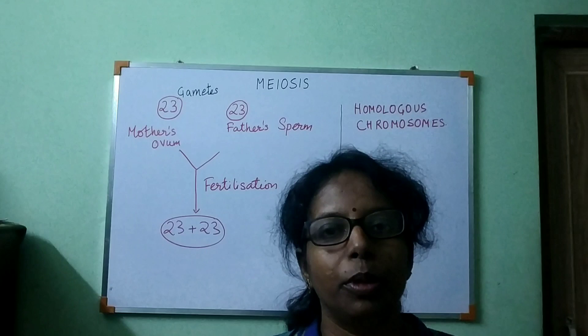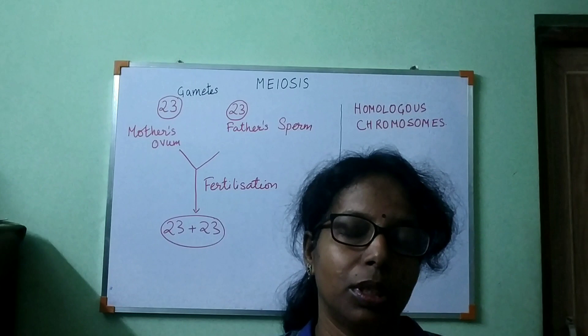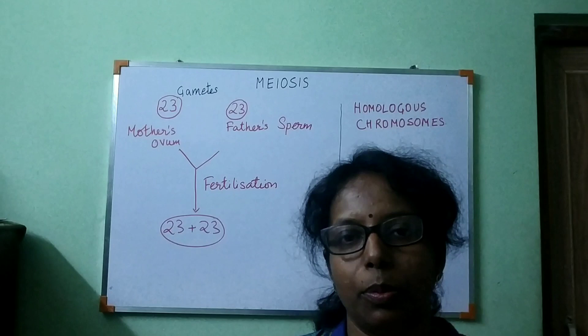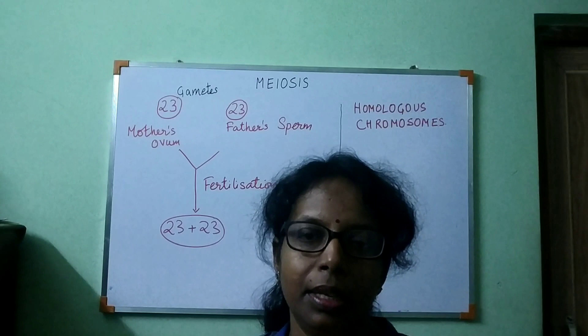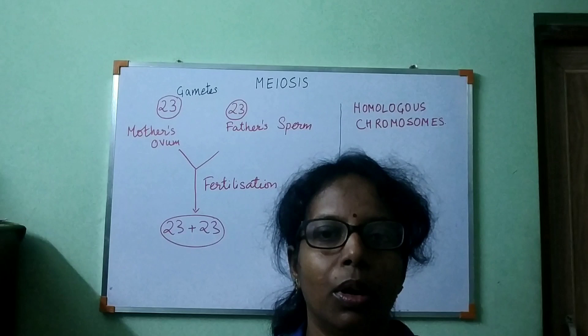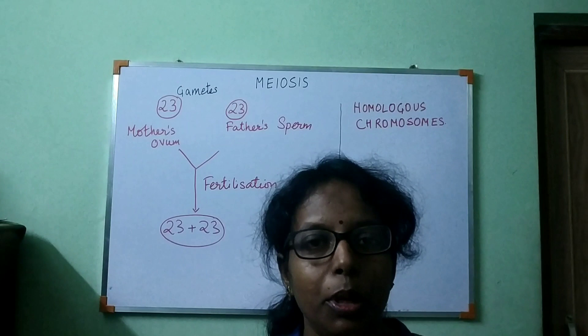For example, in human males the testis is the reproductive organ, and in testis the sperms or gametes are produced by the process of meiosis. In human females, ovum are produced by the process of meiosis. Similarly, in flowering plants, anthers have pollen grains which are produced by meiosis, and the ovary has ovules which are also produced by meiosis.